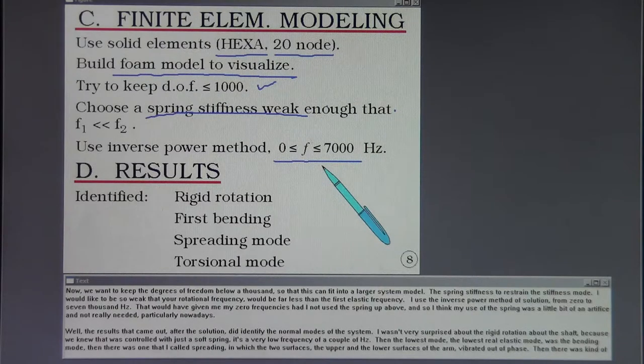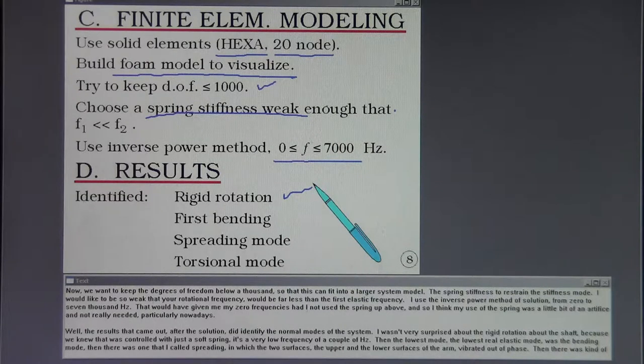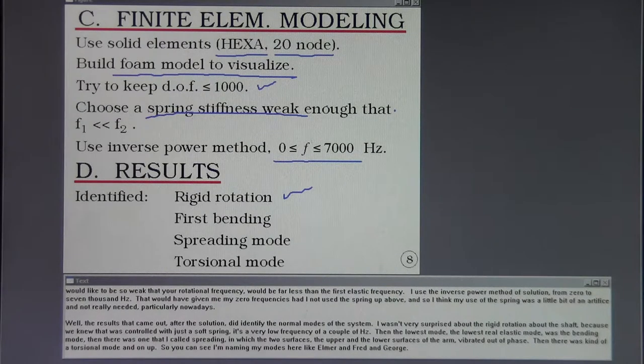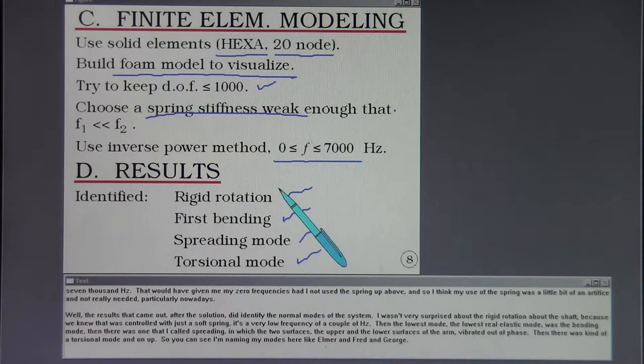Well, the results that came out after the solution did identify the normal modes of the system. I wasn't very surprised about the rigid rotation about the shaft because we knew that was controlled with just a soft spring. It's very low frequency of a couple of hertz. Then the lowest mode, the lowest real elastic mode was a bending mode. Then there was one that I called spreading in which the two surfaces, the upper and the lower surface of the arm, vibrated out of phase. Then there was a kind of a torsional mode and then on up. So you can see I'm naming my modes here like Elmer and Fred and George.